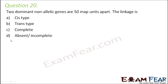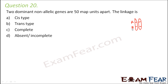What do we understand by cis and trans type? When two genes are linked — that is, located on the same chromosome — if you have two homologous chromosomes, cis type is when the dominant alleles are present on the same chromosome and the recessive alleles are present on the other chromosome of the homologous pair.